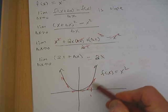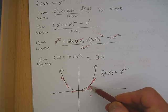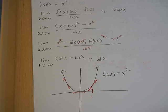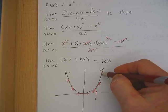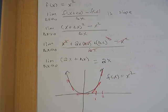What's the slope of the tangent line at x equals 1? 2. So, the slope of this line right here at the tangent of x equals 1, the slope is 2.